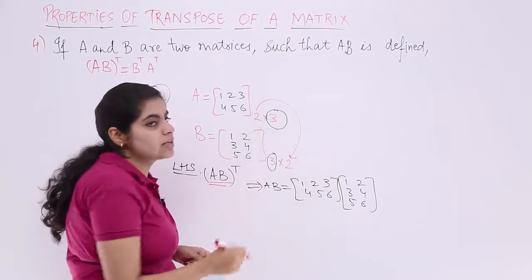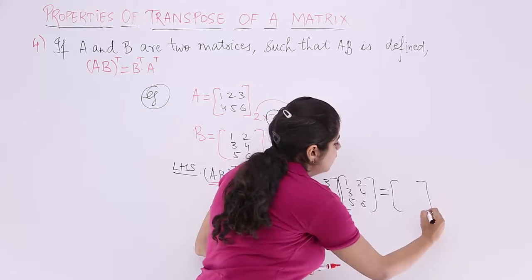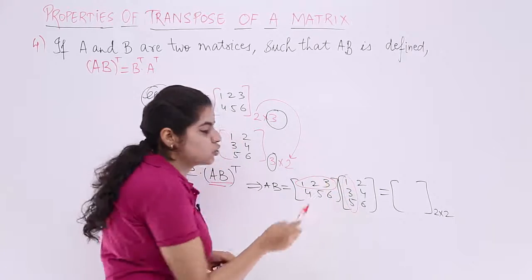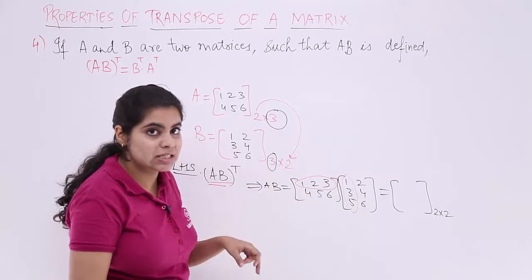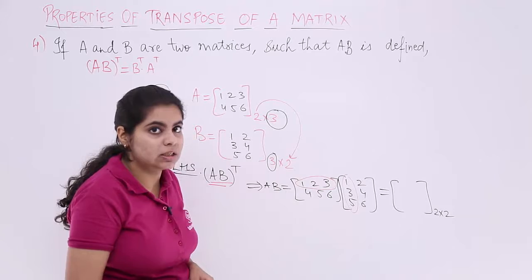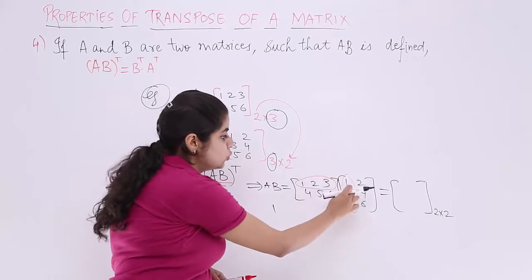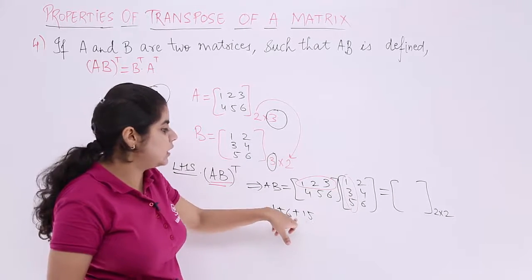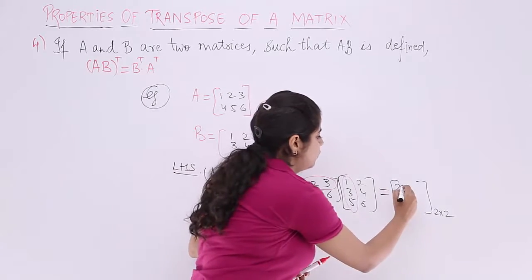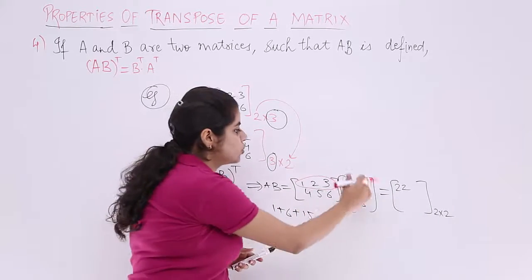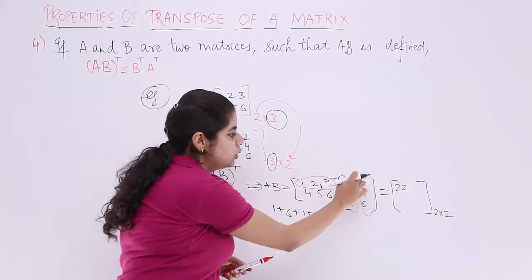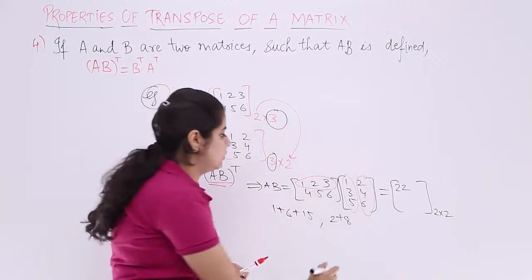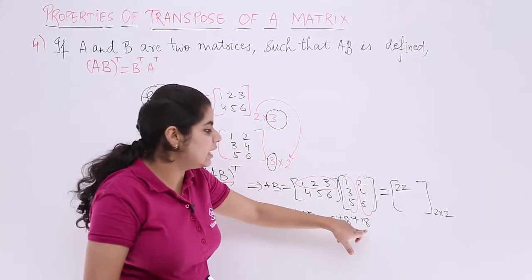The element at row 1, column 1 is: 1×1 + 2×3 + 3×5 = 1 + 6 + 15 = 22. The element at row 1, column 2 is: 1×2 + 2×4 + 3×6 = 2 + 8 + 18 = 28.